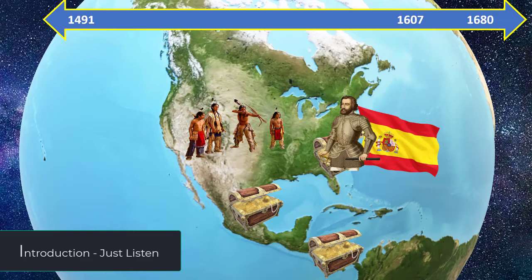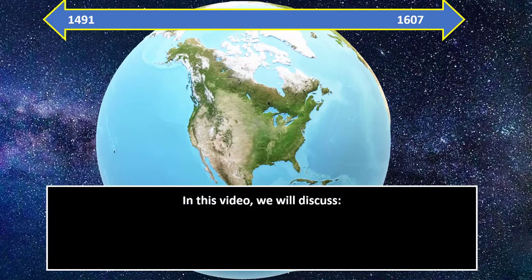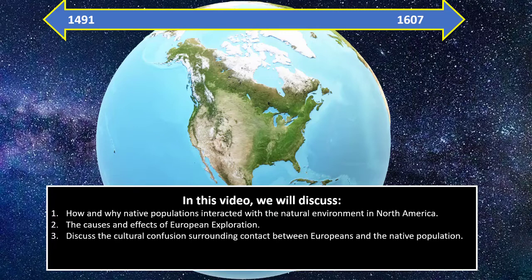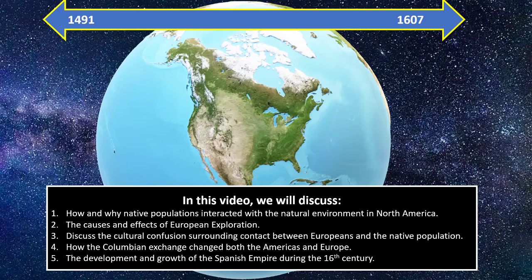This video will slightly go beyond 1607 in order to discuss how one Native society fights back to attempt to preserve their remaining cultural heritage. In this video, we will discuss how and why Native populations interacted with the natural environment in North America, the causes and effects of European exploration, the cultural confusion surrounding contact between Native Americans and Europeans, how the Columbian Exchange changed both the Americas and Europe, and the development and growth of the Spanish Empire during the 16th century.